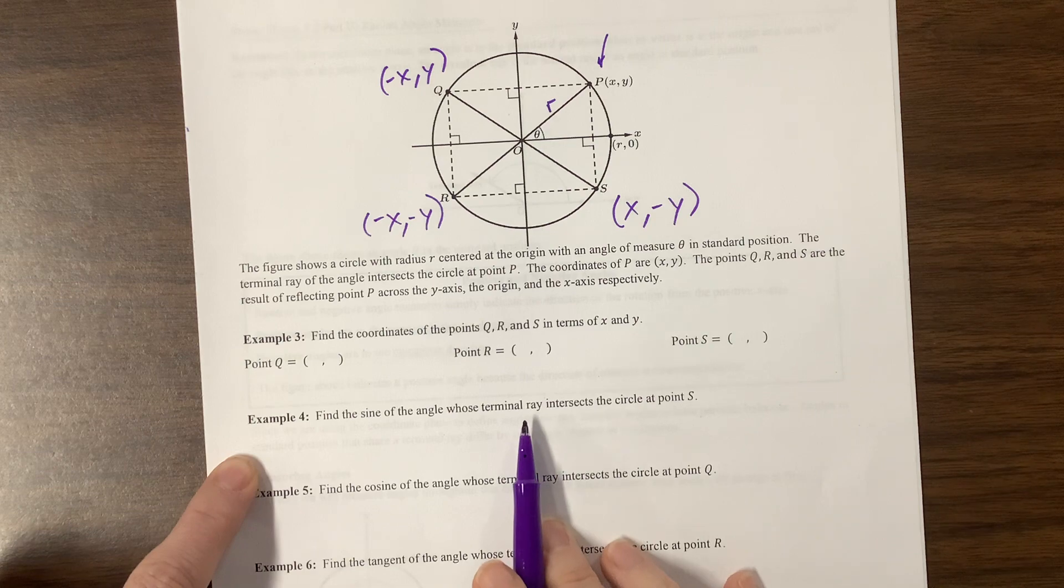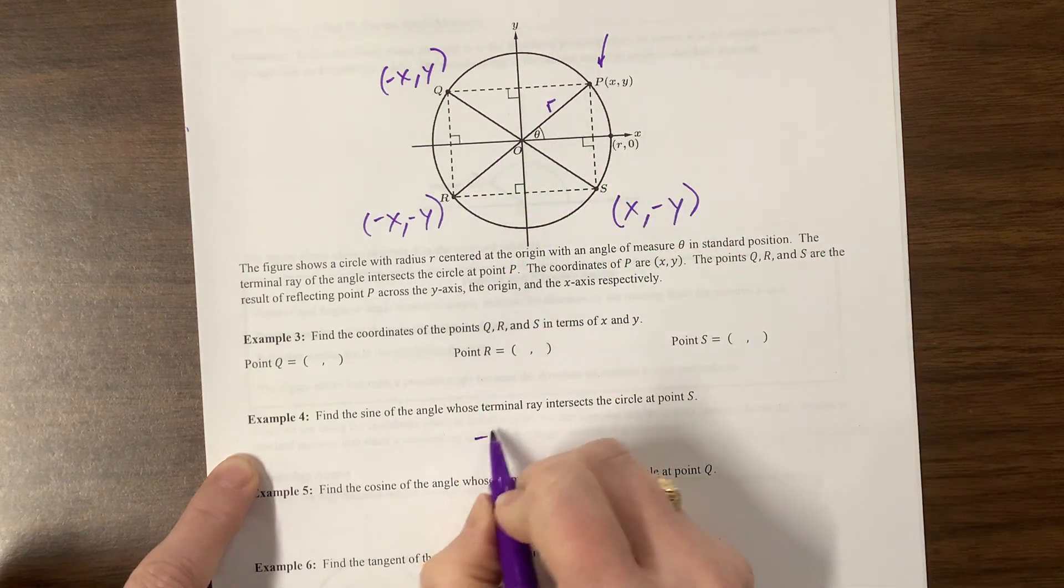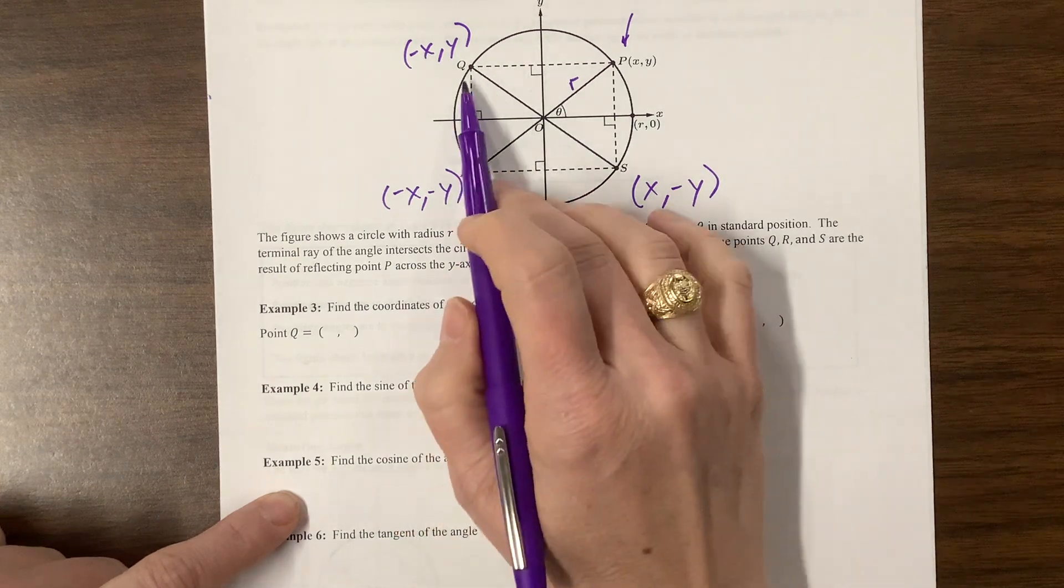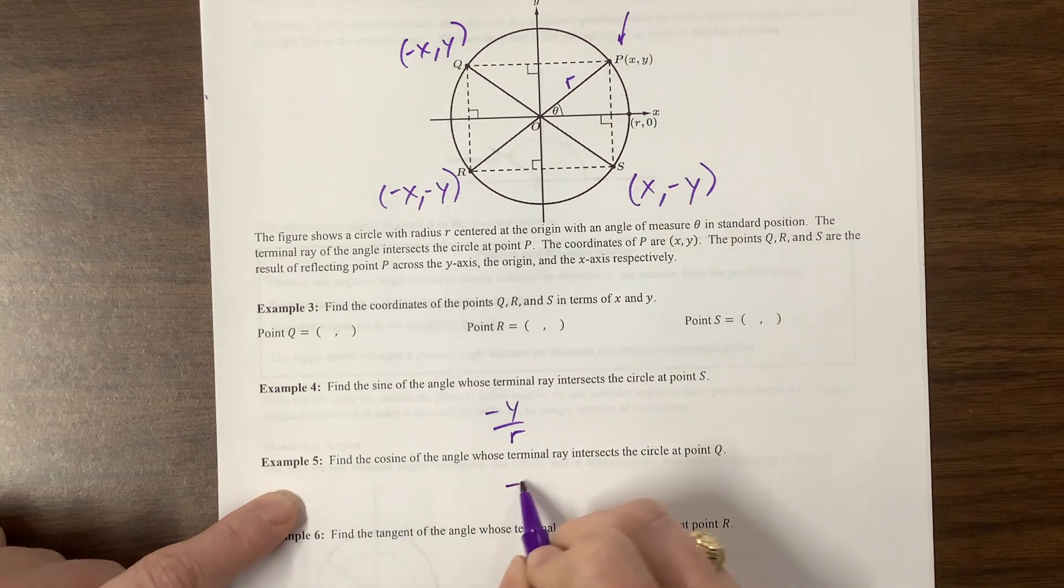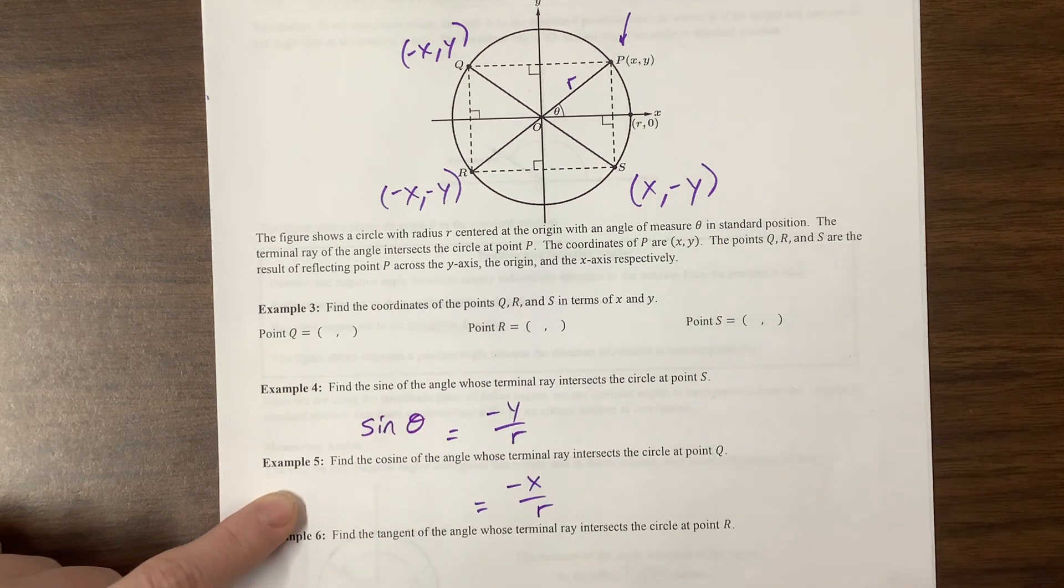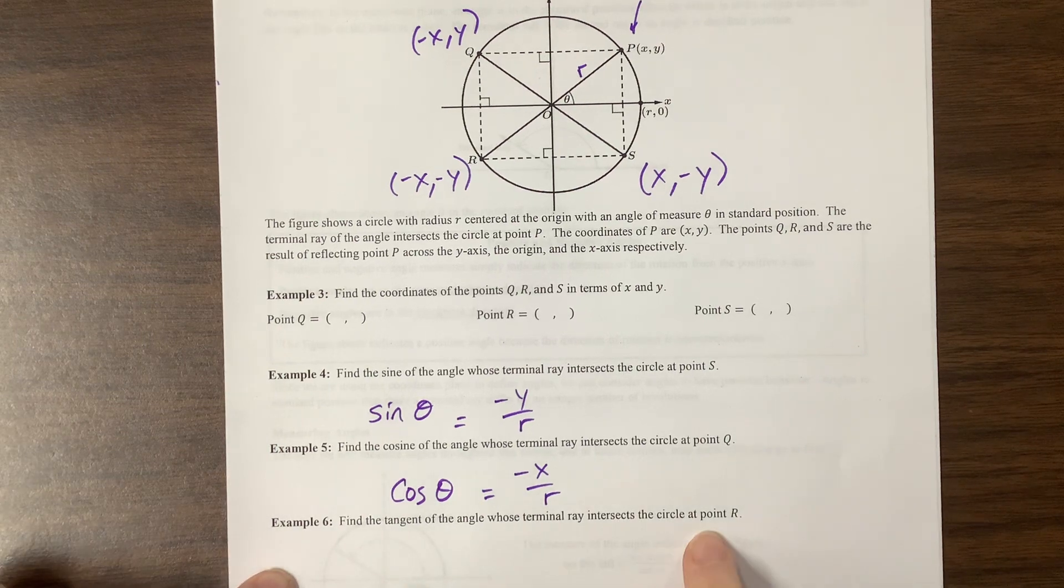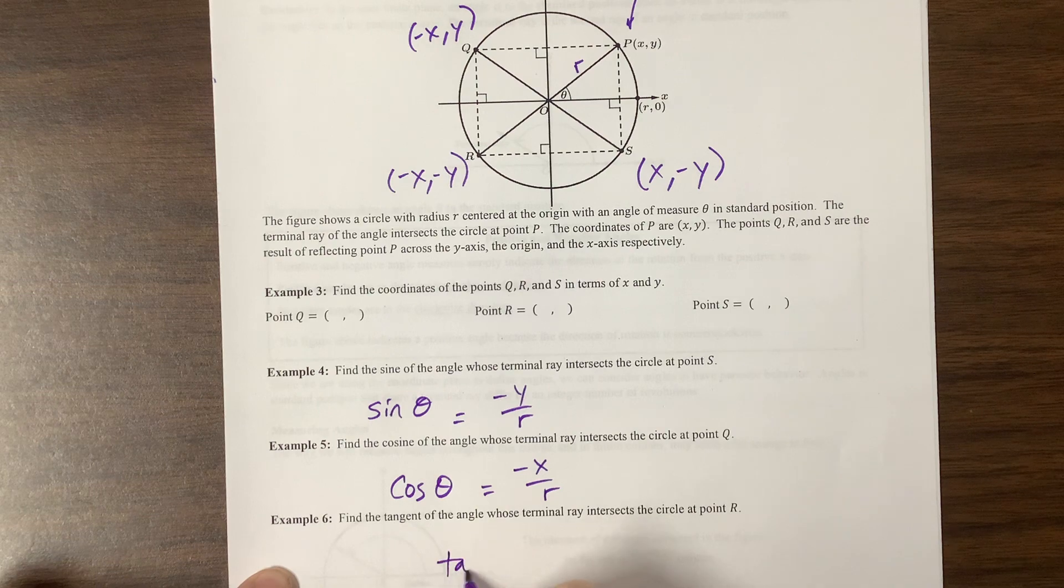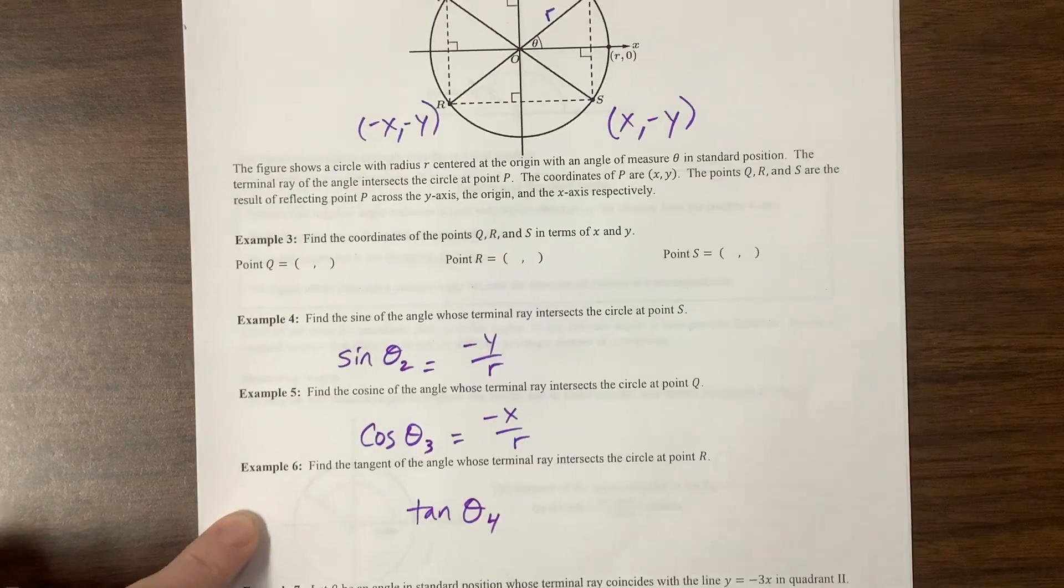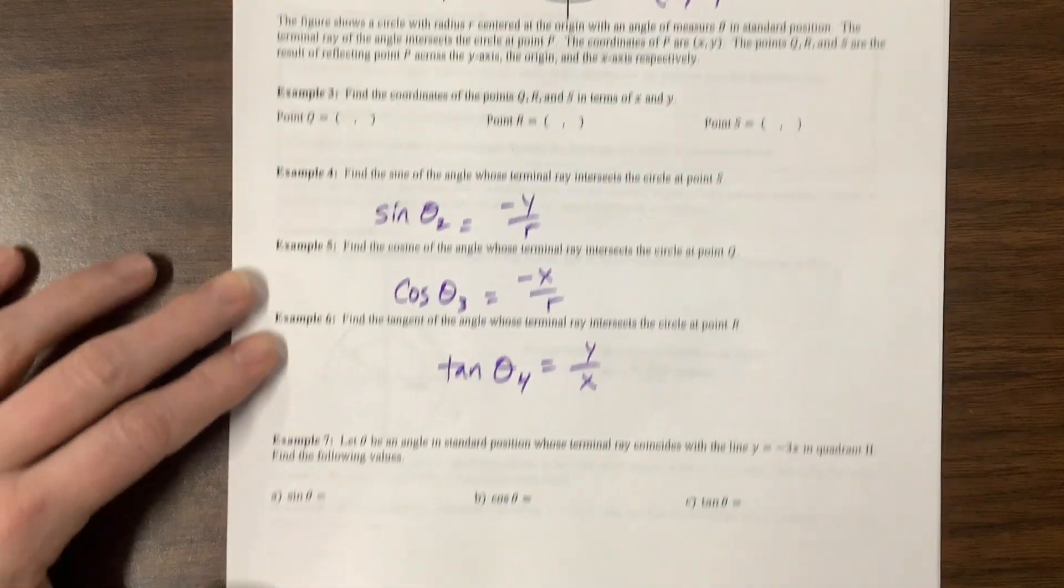And then it says, find the sine of the angle whose terminal ray intersects the circle at point s. So sine is going to be y over the r. So negative y over r is going to be sine of that theta. Find the cosine at point q. Here's q. Cosine is the x value, which is a negative x over r. So negative x over r. Find the tangent for the terminal ray who intersects at r. Well, r, so tangent of this new theta. Theta, this is, we're going to call this theta one, we're going to call this theta two and this theta three. Here comes theta four, just so that I have different variables for everybody. And that's going to be the y over x. And since it's negative over negative, it becomes positive. And there we go.